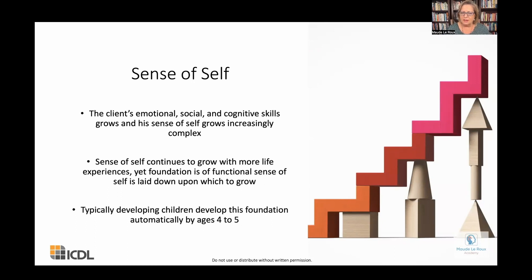That sense of self means: I can apply myself even when I don't know the outcome, even when things are unpredictable. I can have a groundedness within myself that trusts that even when things don't work out, I will still be okay. This sense of self comes from an emotional place, a social place, a cognitive place — it's an increasingly complex piece that grows through different life experiences. Most kids who are not typically developing are avoiding the very circumstances they need in order to grow.